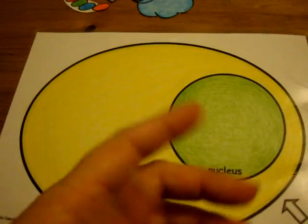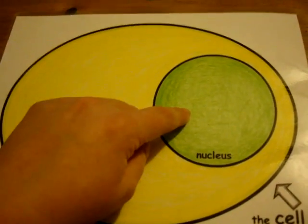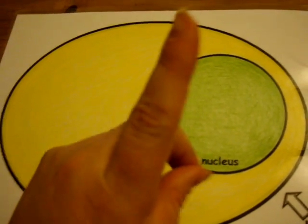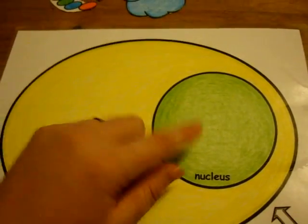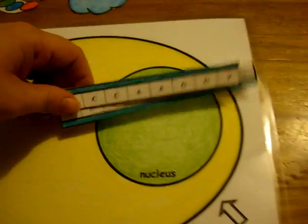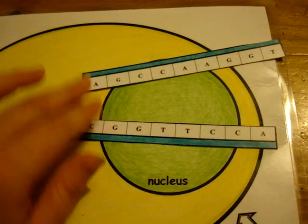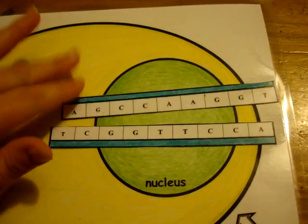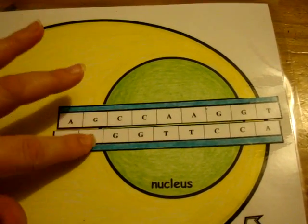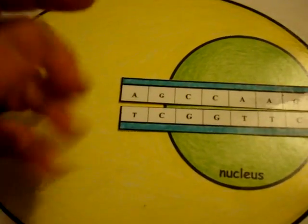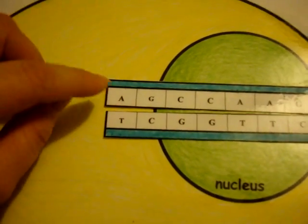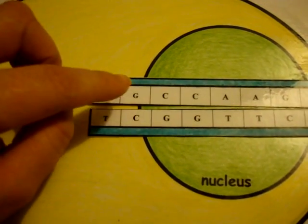First, we have to recall that inside some cells they will have a nucleus. The nucleus is very important because inside here it has your genetic material. Your genetic material is going to be your DNA — a double helix with two strands. The way they pair together is A goes to T and G goes to C.